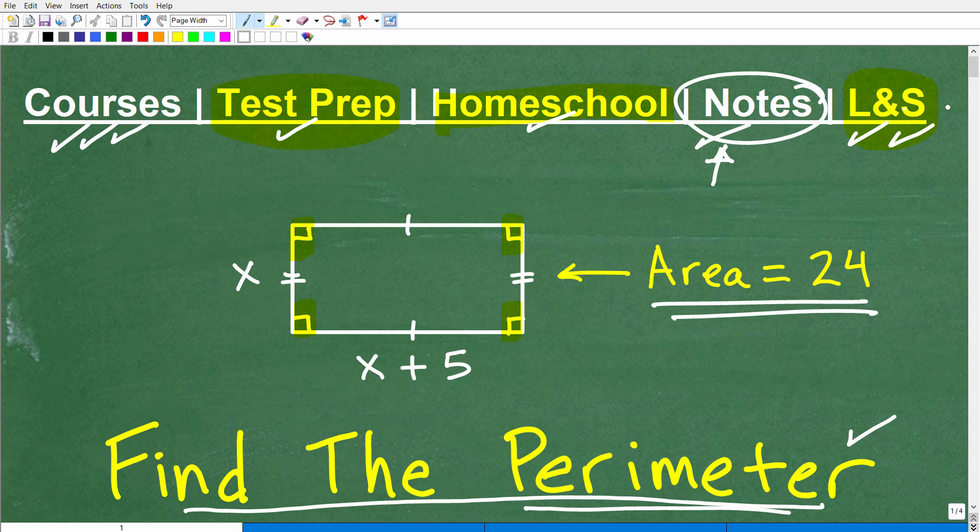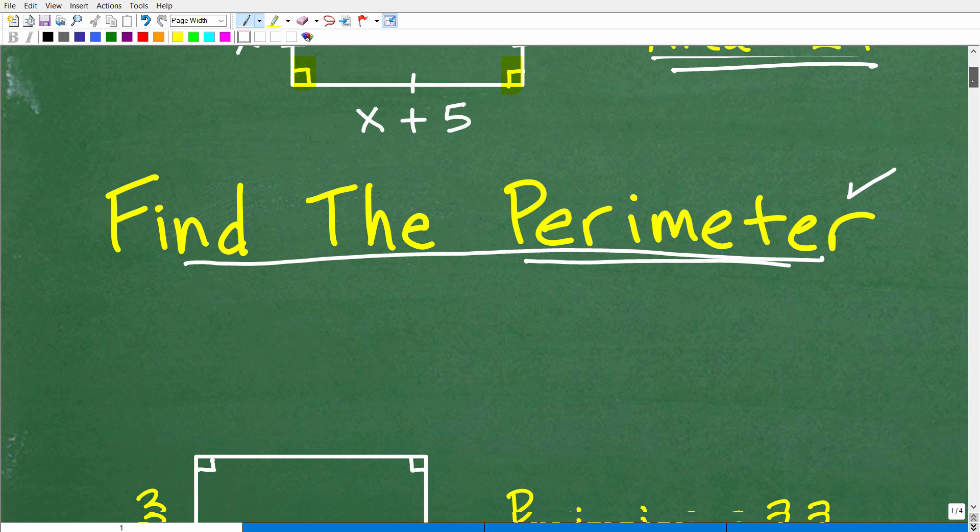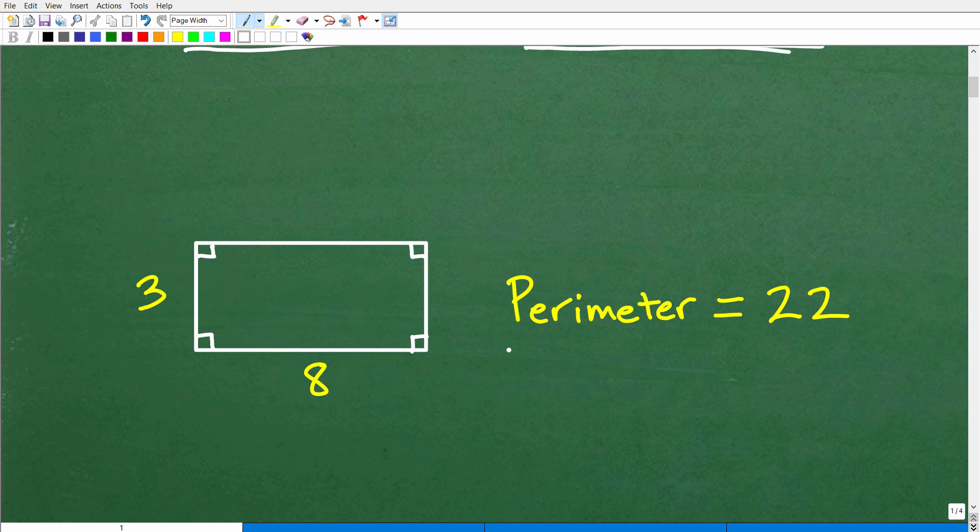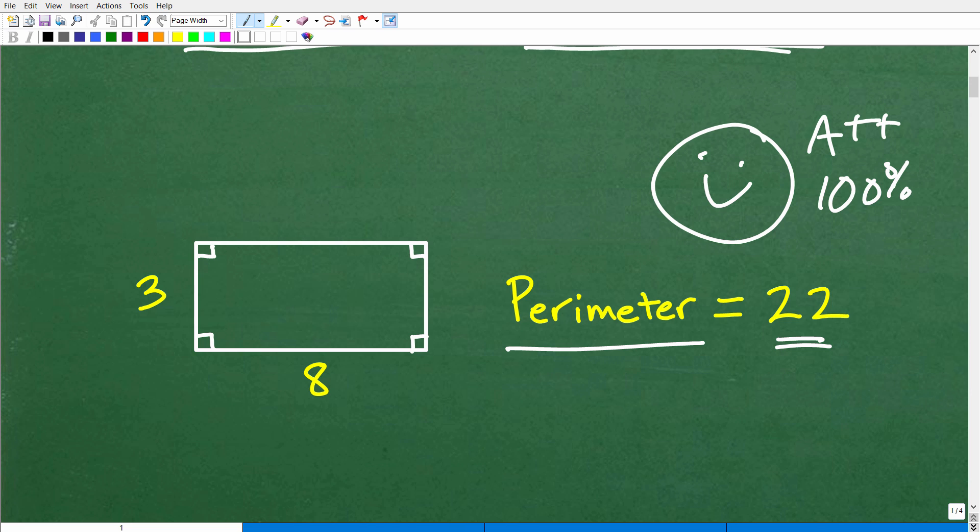I'm going to show you the answer right now. If you don't want to see it, pause the video. But again, you are going to need a quadratic equation. Here is the answer. The perimeter is 22, and this would be the dimensions of this rectangle: 3 and 8. If you got this right, I must reward you with a nice happy face, an A++ 100. Nice job.